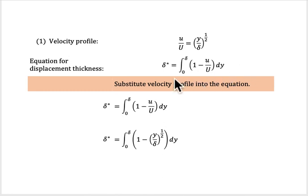actually first you need to remember the equation for the displacement thickness. So this is the equation for the delta star. What you need to do is very simple. In this equation, you have u over U term here. So you just substitute the value of u over U from the question into this equation.